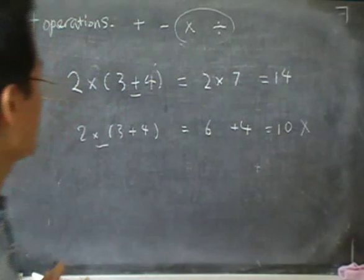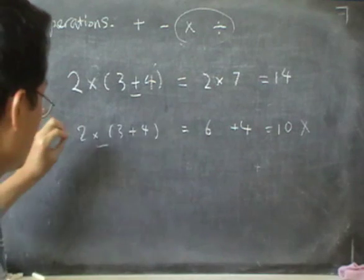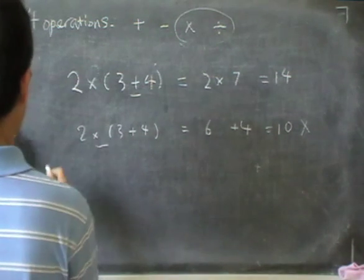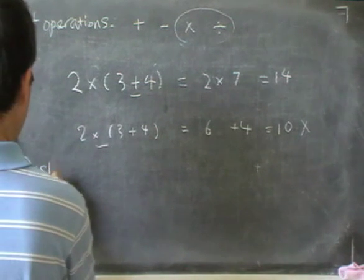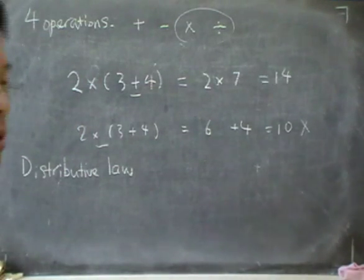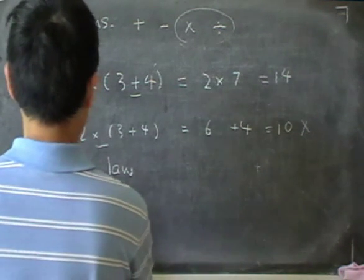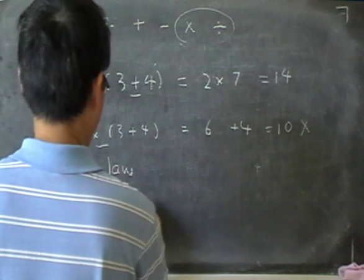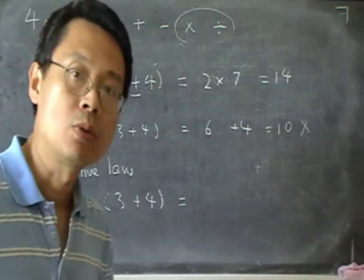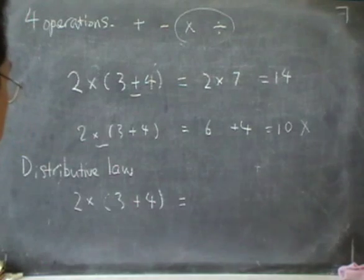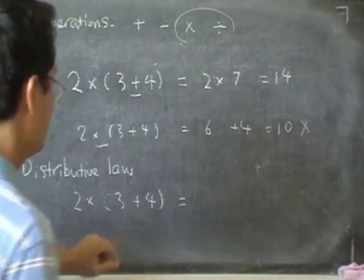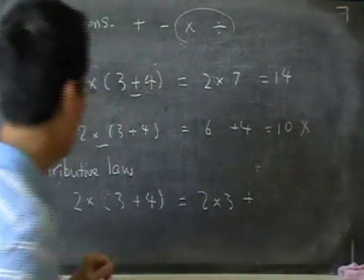Now, the next thing we need to learn is that there's something we can do with the bracket. There is a law which is called the distributive law. In this distributive law, when we have a sum with a bracket, it allows us to remove the bracket. Now if we remove the bracket, what we must do is we do a 2 × 3 and we do a 2 × 4.